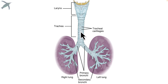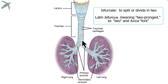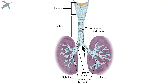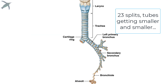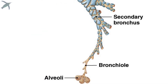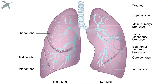The trachea, or the windpipe, comes down and bifurcates — it splits into the primary bronchi, which then split again into secondary bronchi, and so on. A total of 23 splits, finally resulting in the alveoli, which are going to be the gas exchange surfaces.